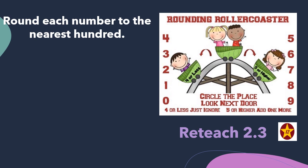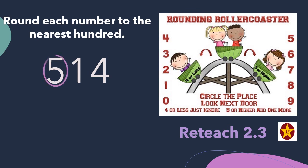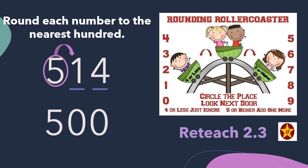We're going to do one more together and that's number 12. Let's take a look at 514. Circle the place — we're rounding to the nearest hundred, so we're going to circle the hundreds place. Look next door — we're going to look at the digit to the right. Four or less, just ignore. So this boss number tells the 5 to stay the same. So when I write my new rounded number, that 5 is going to still be a 5 in the hundreds place. And those digits to the right of that place, well, they're going to become zeros. So 514 rounded to the nearest hundred is 500, because 514 is closer to 500 than it is to 600.